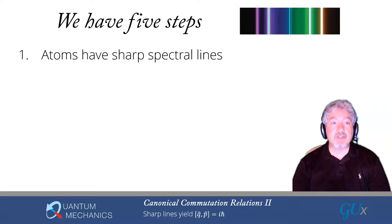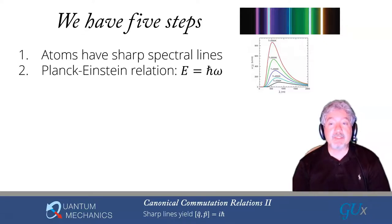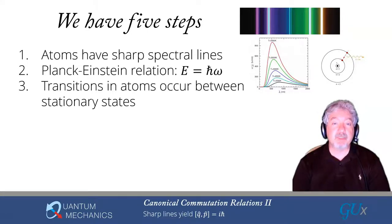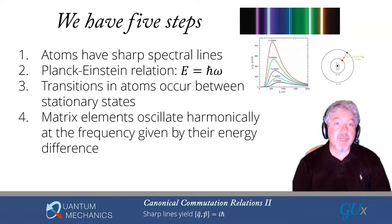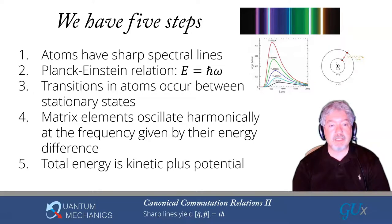There are five steps to this motivation. The first is that when we look at atomic spectra, they have sharp lines. The second is to use the Planck-Einstein relation, which says the energy of a photon is given by h-bar times omega, and light comes in packets called photons carrying energies that are multiples of h-bar omega. Third, we work with the Bohr postulate that stationary states exist in atoms and that transitions corresponding to light emitted from atoms come from transitions between these stationary states. Fourth, Heisenberg told us that matrix elements oscillate harmonically at the frequency given by the energy difference. And finally, the total energy is the kinetic energy plus the potential energy.